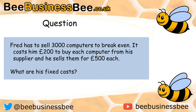The best way to test your understanding is to have a go at some questions. Here's the first one: Fred has to sell 3,000 computers to break even. It costs him £200 to buy each computer from his supplier and he sells them for £500 each. What are his fixed costs? Pause the video now while you complete that task.